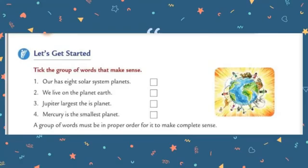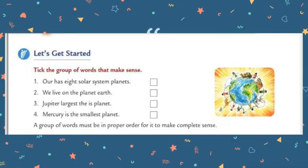Let's do the first exercise: tick the group of words that make sense. A sentence is a group of words which makes complete and meaningful information. The first one — 'Our as eight solar system planets' — is not a sentence; the words are not arranged in proper order, so put a cross mark in the first box.